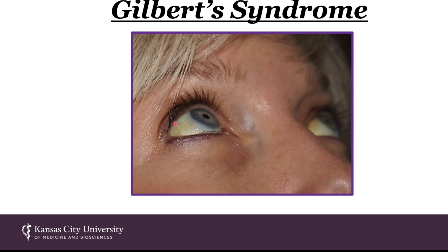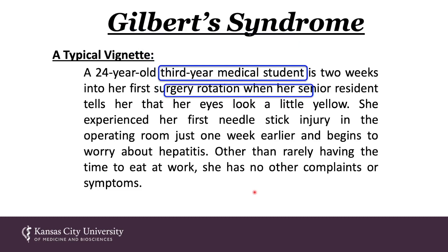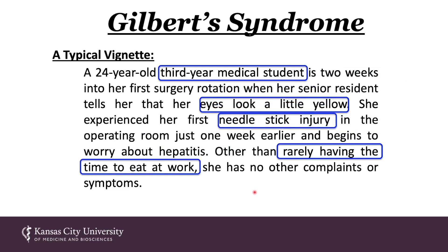That comprises the relationship between UGT1A1 and Krigler-Nyar type 1 and type 2. Let's talk about Gilbert's syndrome. Gilbert's syndrome may present with yellowing or jaundice in the eyes of your future patients. A typical vignette: a 24-year-old third-year med student, two weeks into her first surgery rotation, is told her eyes look a little yellow. She experienced her first needle stick injury in the OR just one week earlier and worries about hepatitis. Other than rarely having time to eat at work, she has no other complaints.